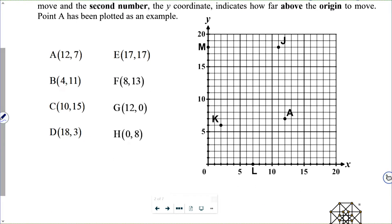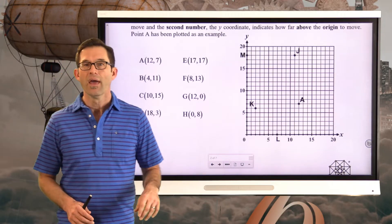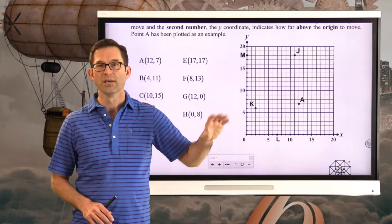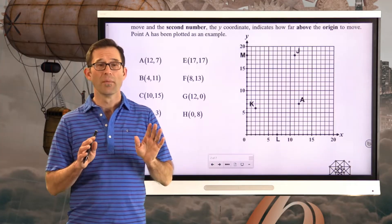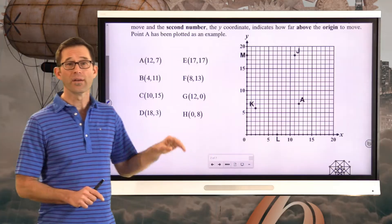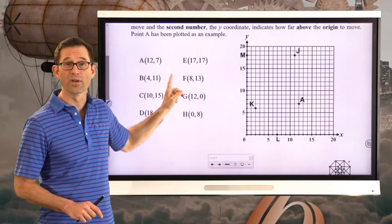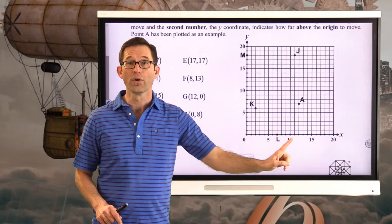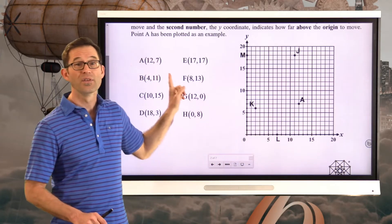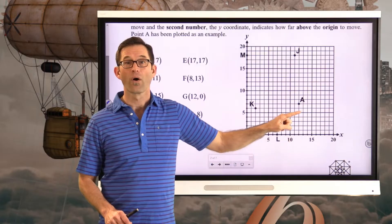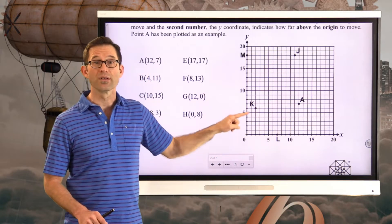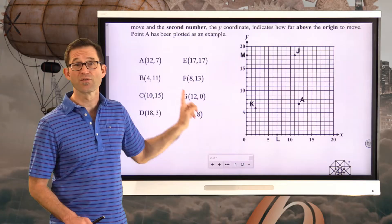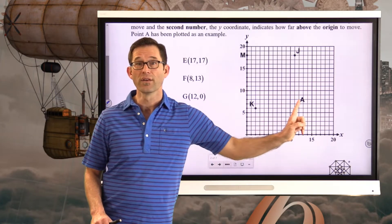Those other points besides point A — K, L, and M — we're getting to those in exercise number three. The general idea is this: if we've got a point like 12 comma 7, that first number literally tells us how far we should go to the right. So we're at zero, we go to the right 12 units. The second number, the 7, tells us how far up we should go. We could go up first and then across, but since the x-number goes first, we typically think about going to the right and then going up.